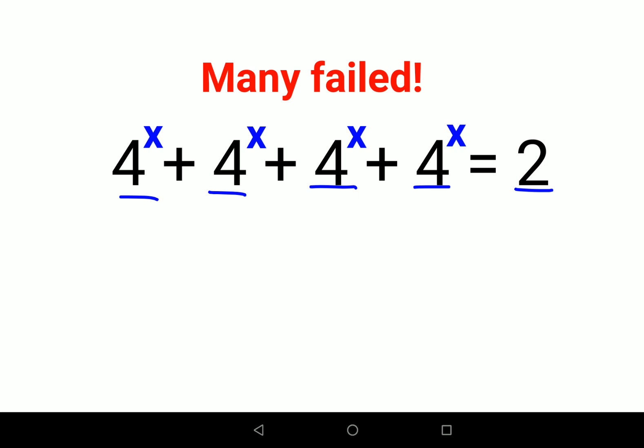Now the first thing we can do is take 4 raised to x common. So I have 1 plus 1 plus 1 plus 1 equals to 2. This becomes 4 raised to x into 4 equals to 2.